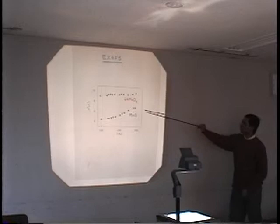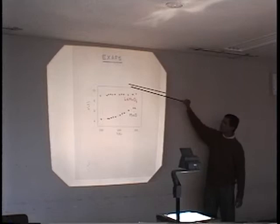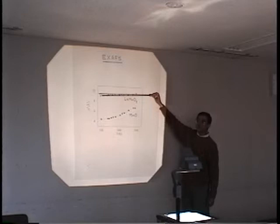Now LaMnO3, which has strong static Jahn-Teller distortion, shows that it's not very temperature dependent because it's dominated by the static Jahn-Teller distortion which does not depend on the temperature.